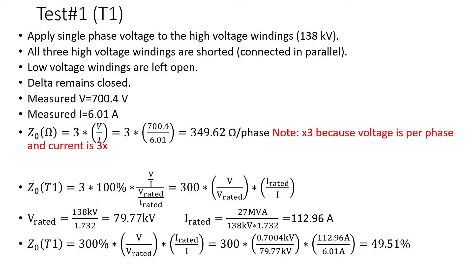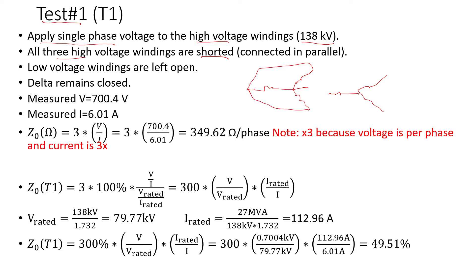Test One: apply single-phase voltage to the high voltage winding — I'm going with 138 kV as an example. All three high voltage windings are shorted, meaning they are in parallel. You short the terminals, then apply single-phase voltage with all the high-side voltage windings shorted to the neutral, and leave the low side open.